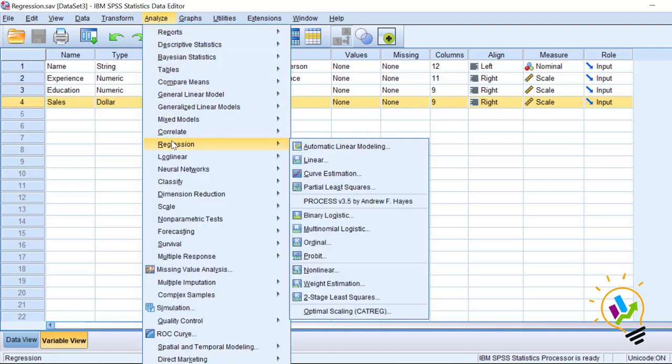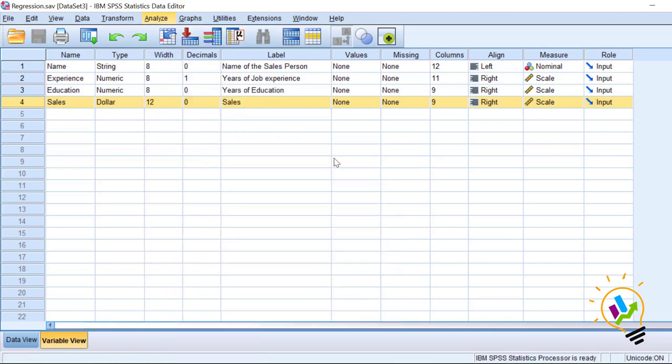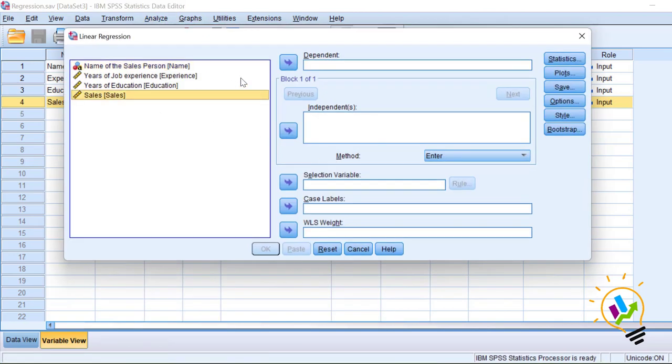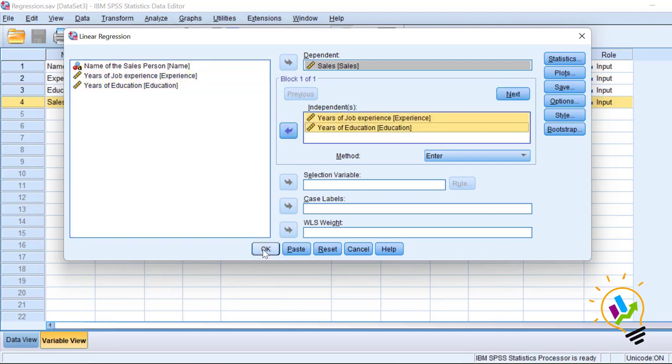For this, analyze regression, linear. Let us take sales as a dependent variable and these two as independent variables: job experience, years of job experience and years of education, and click OK.